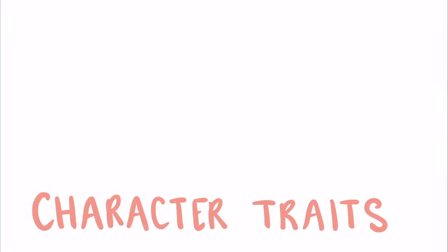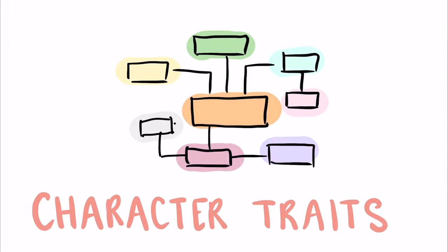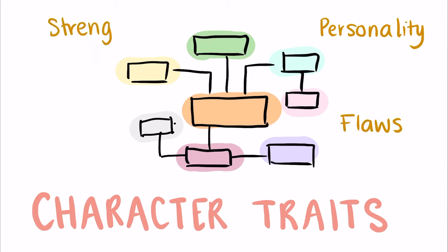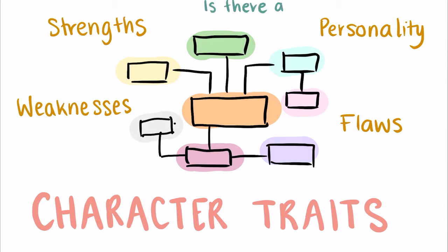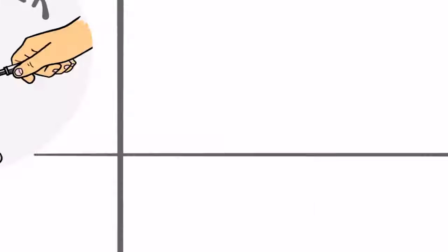The easiest thing to analyze is the character's traits, aka their personality — what makes them flawed, their strengths and their weaknesses, and whether these change throughout the story. It is also important to note whether they are positive or negative traits and how they shape the character as they move along the plot.